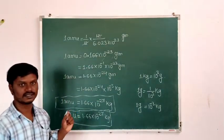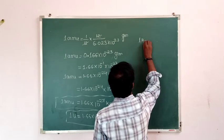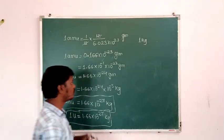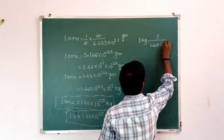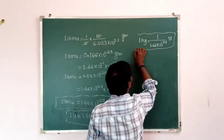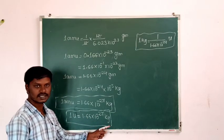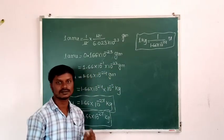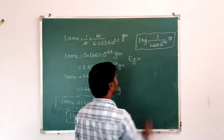To convert kg to atomic mass unit, we take 1 divided by 1.66 × 10⁻²⁷ atomic mass units. So remember: 1 amu = 1.66 × 10⁻²⁷ kg, and 1 kg = 1 / (1.66 × 10⁻²⁷) atomic mass units.